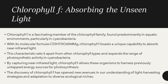Chlorophyll F — absorbing the unseen light. Chlorophyll F is a fascinating member of the chlorophyll family, found predominantly in aquatic environments and particularly in cyanobacteria, with a molecular formula of C55H70O6N4Mg. Chlorophyll F has a unique capability to absorb near-infrared light. This characteristic sets it apart from other chlorophyll types and expands the range of photosynthetic activity in cyanobacteria. By capturing near-infrared light, chlorophyll F allows these organisms to harness previously untapped energy sources for photosynthesis. The discovery of chlorophyll F has opened new avenues in our understanding of light-harvesting strategies and adaptation to diverse ecological niches.